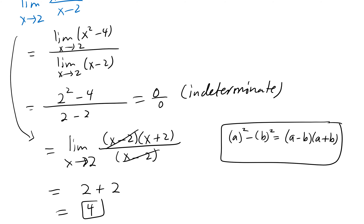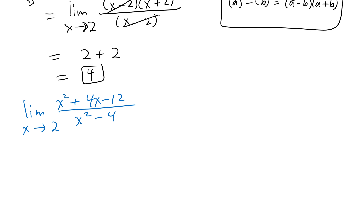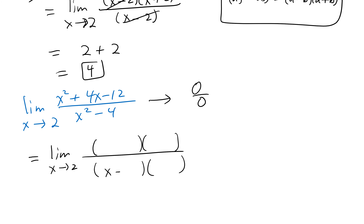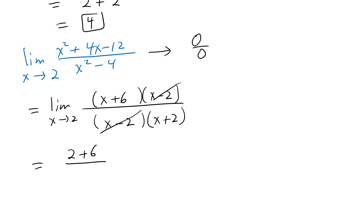Another example: find the limit of (x² + 4x − 12)/(x² − 4) as x approaches 2. Passing the limit directly gives 0 over 0, so we factor. The top factors as (x + 6)(x − 2) and the bottom as (x − 2)(x + 2). The (x − 2) factors cancel, and substituting x = 2 gives (2 + 6)/(2 + 2) = 8/4 = 2.